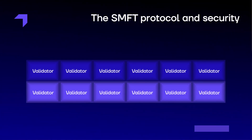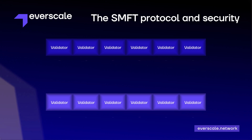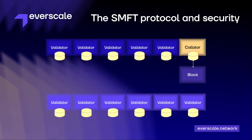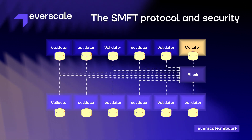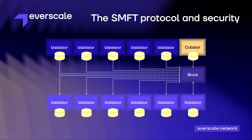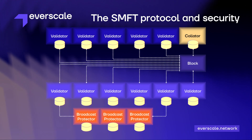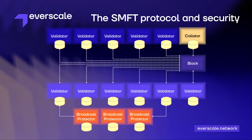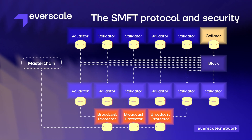The SMFT protocol requires every block sent to the network to be verified. First, a thread collator — i.e. the validator proposing a new block — sends it to all nodes of the work chain. Then, some nodes of the work chain, called broadcast protectors, ensure that the block has been sent to 51% of validators, and send this information to the master chain.